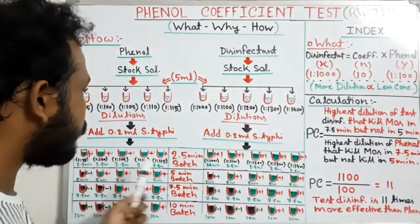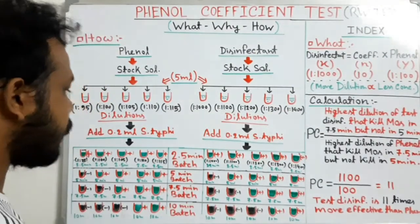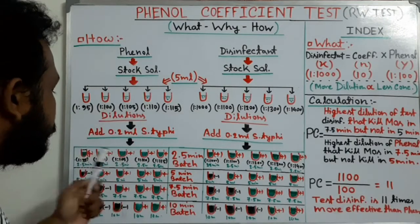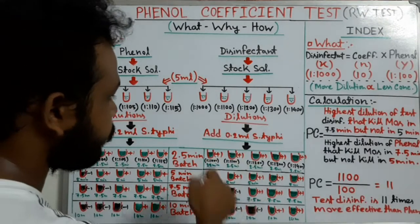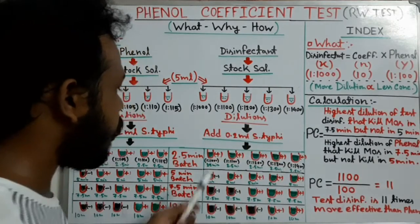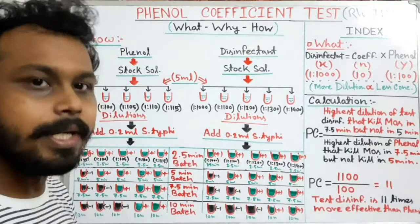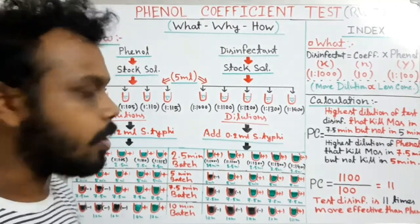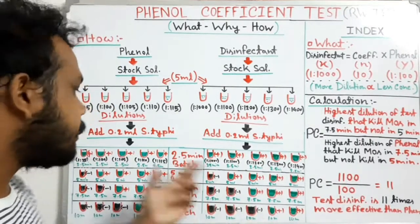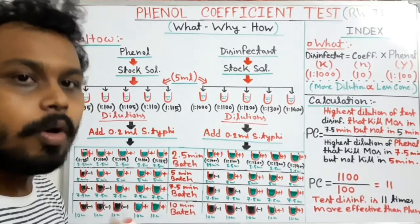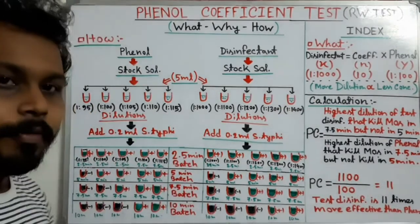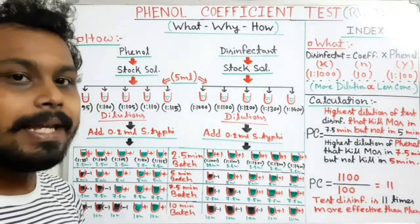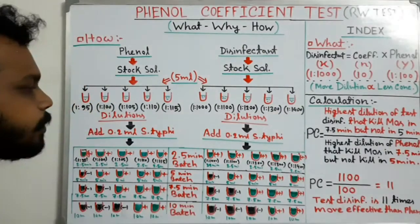After inoculating all the Rideal-Walker broth tubes — 20 tubes for phenol and 20 tubes for disinfectant — they are incubated for 48 to 72 hours. After that, we check whether these tubes show any turbidity or growth.